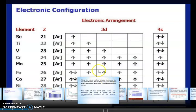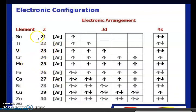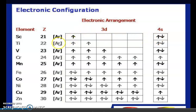Now let's discuss electronic configuration. Scandium, atomic number 21: its configuration is [Ar] 4S² 3D¹. Electrons go into 4S first, then into 3D. Titanium: [Ar] 4S² 3D². According to Hund's rule, orbitals are first half-filled then paired. Vanadium: [Ar] 4S² 3D³.